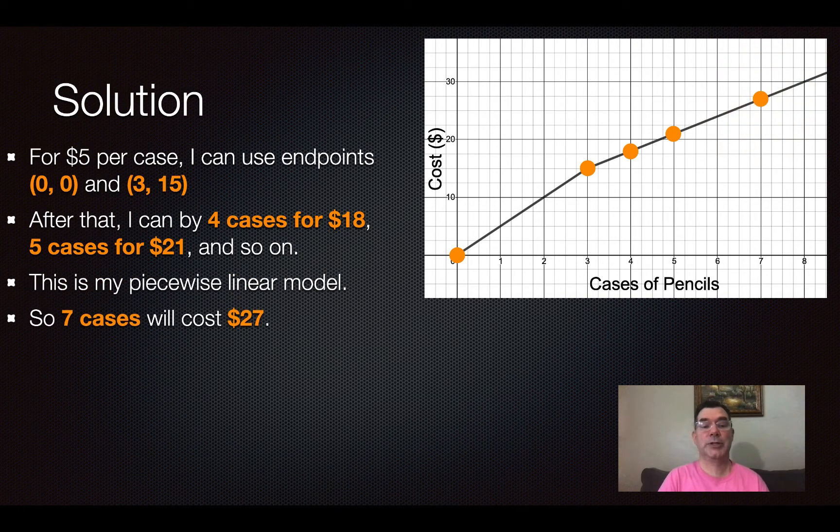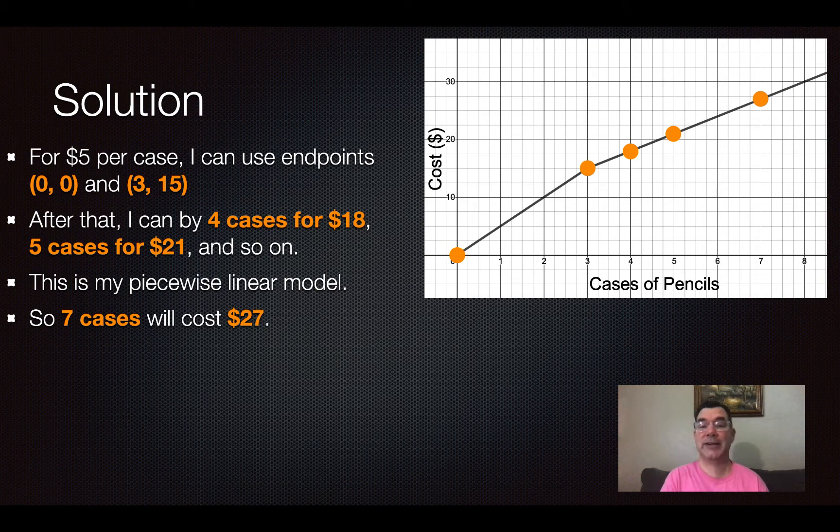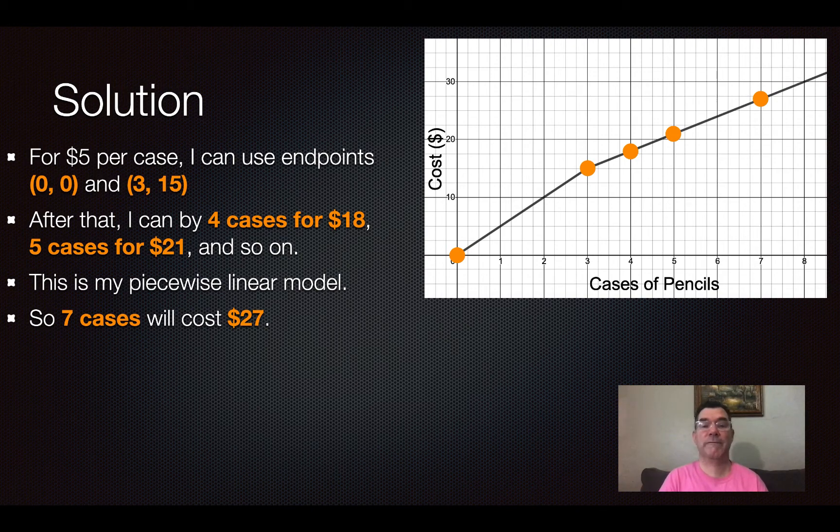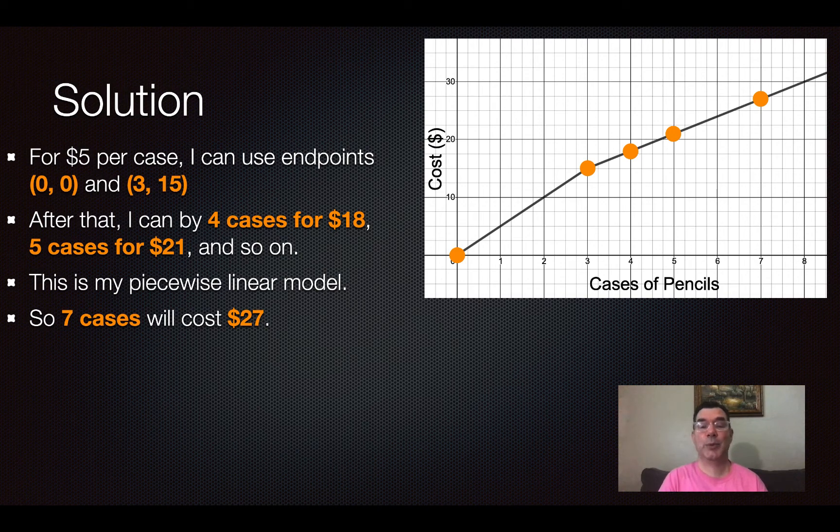And so I can predict that if I wanted to buy 7 cases, that would cost me $27. So it's a piecewise model and I can use it to find data points that I don't already have and I can use it to predict data points that go beyond the data that I already have.